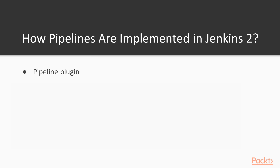Now let's look at how pipelines are implemented in Jenkins. Before Jenkins 2, building a pipeline with Jenkins was a bit awkward and required multiple plugins and complex dependencies between jobs. Jenkins 2 introduced the pipeline plugin, previously known as Workflow, and several features making pipelines first-class citizens in Jenkins. In particular, pipelines are implemented through a Jenkins file that is typically stored at the root of your source control repository.